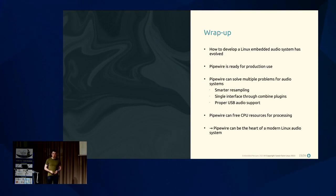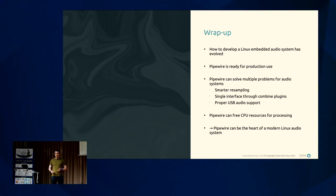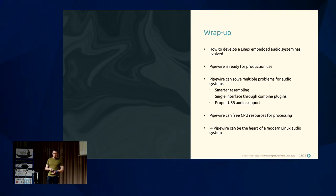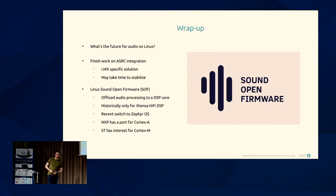To wrap up: the way we develop audio systems has evolved a lot and we can now use Linux as a solution. PipeWire is now ready for production use — two years ago I told a customer it might be too early, now I'm telling them they should switch. It went much faster than we expected. It solved multiple real-world audio system problems: resampling issues, proper USB asynchronous support which was basically non-existent before PipeWire, and the ability to use a single interface through PipeWire plugins to free up CPU resources.